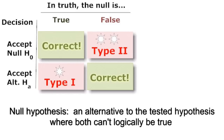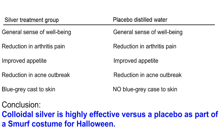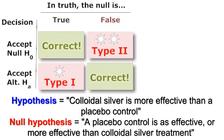What is needed — and what is used in real scientific studies — is a null hypothesis. The null hypothesis is an alternative to the tested hypothesis, where both can't logically be true. In our colloidal silver example, the null hypothesis might be that the health effects of the silver solution are no different than the distilled water control group who were told they were getting silver. If we go looking for either hypothesis to be true, and they both are, we can assume that our results are biased and inconclusive.